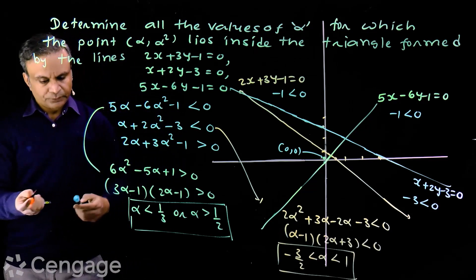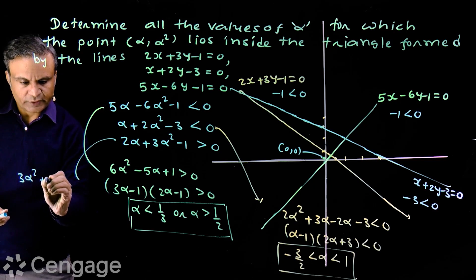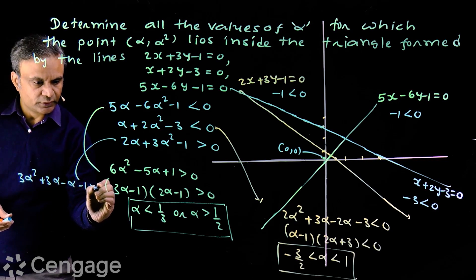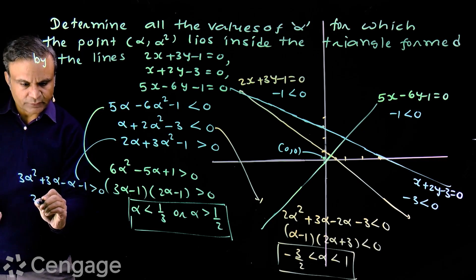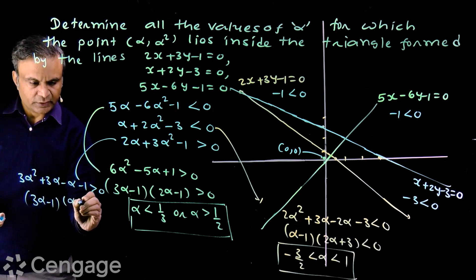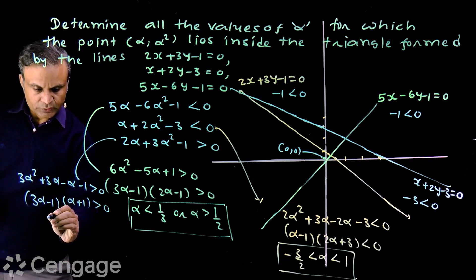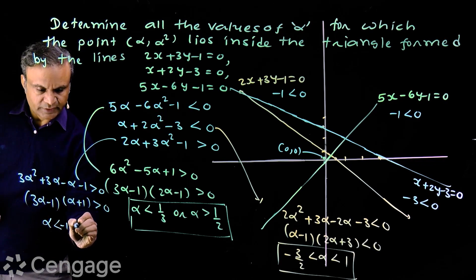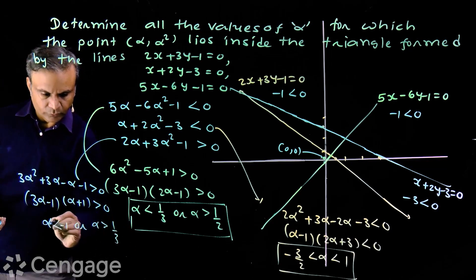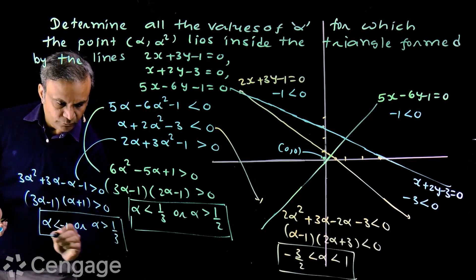Now solving the third inequality: 3α² + 2α - 1 > 0. We write this as 3α² + 3α - α - 1 > 0, so the factors are (3α - 1)(α + 1) > 0, giving us α < -1 or α > 1/3. This is the third set of values of alpha.